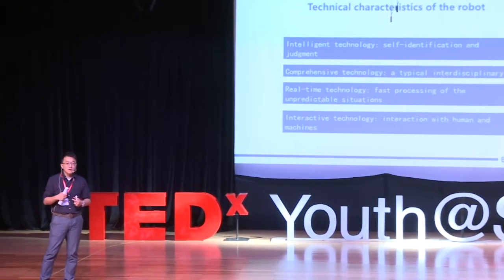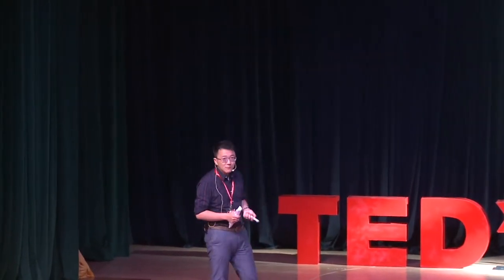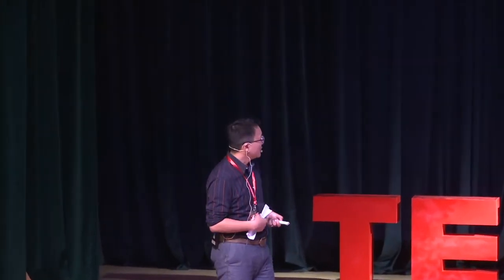And the third thing is real-time technology. Like right now we have 5G, the speed is faster, internet speed is fast. But in some cases of communication in robot systems, we need to have zero delay. So you need to have real-time technology to develop this. And also the final thing you need to consider is interactive technology - how to connect robots with human beings.